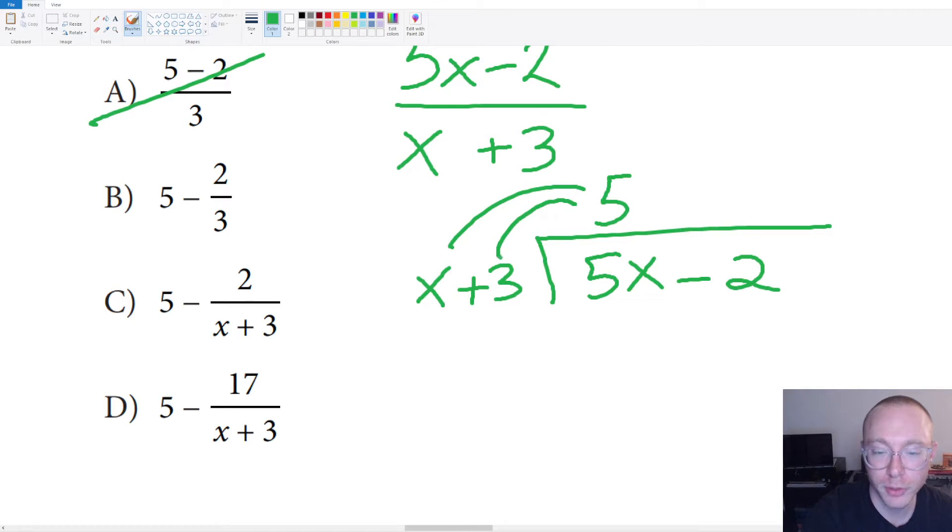Then what you do is you take this five and you distribute it down to X plus three. Five times X would be five X. Five times three would be 15. And just like in long division, we're gonna end up just subtracting and seeing what gets left over.